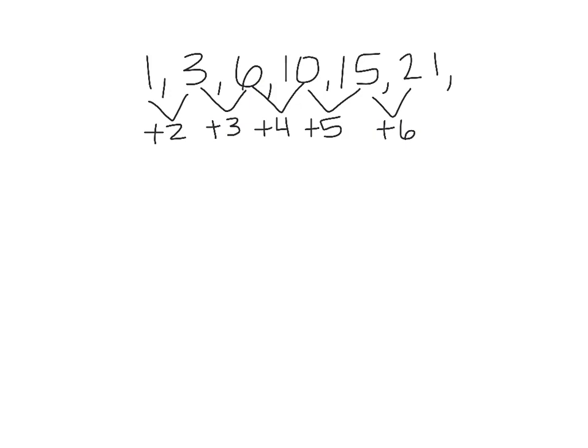Following our rule, we would have to then add 7, and 21 plus 7 is 28. Then we are going to find one more term. This time, we would have to add 8. 28 plus 8 is equal to 36.